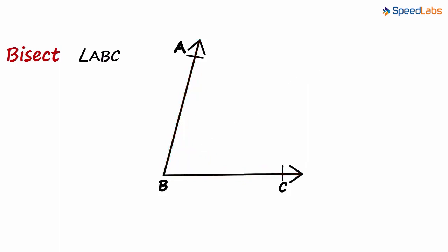To bisect an angle, the first thing that we need is a compass. We keep the compass on the vertex of the angle and set it to any convenient width.